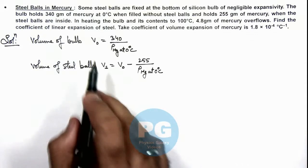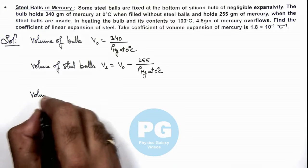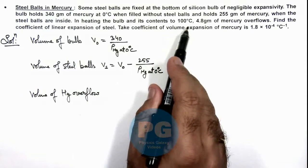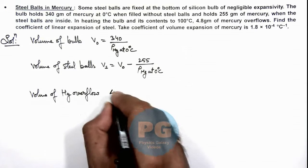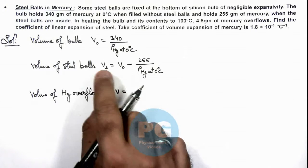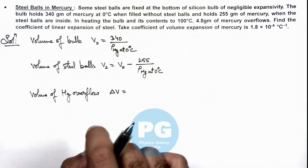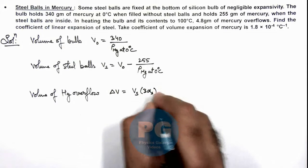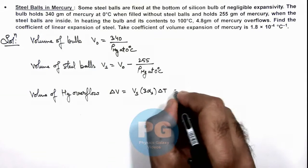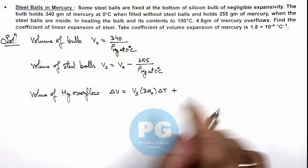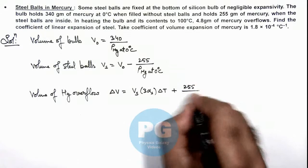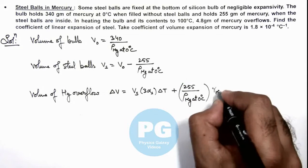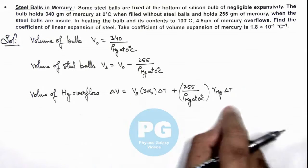Now, having the volume of the bulb as well as that of the steel balls, we can calculate the volume of mercury overflow when the temperature is raised to 100 degrees centigrade. The volume of mercury overflowing equals the expansion in volume of the steel balls plus the expansion of the mercury inside it. This is: V(steel balls) × 3α(steel) × ΔT + (255 / ρ(mercury at 0°C)) × γ(mercury) × ΔT.